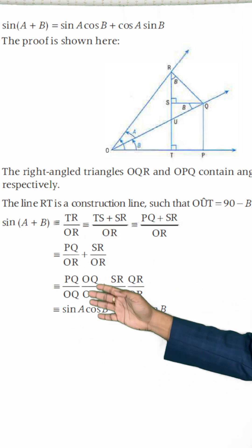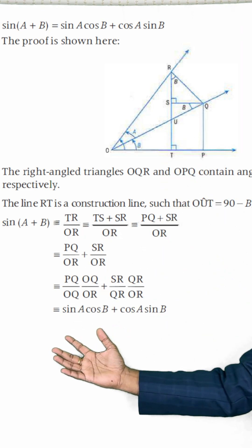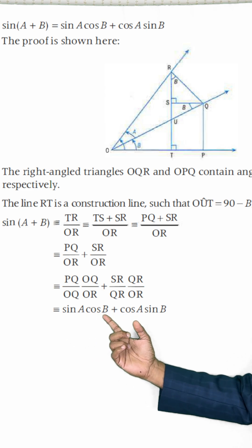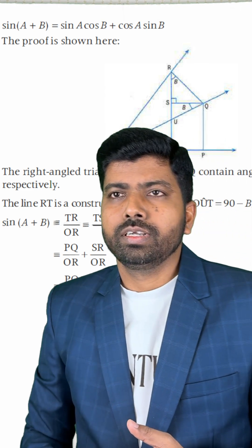If you match all these sides with this diagram, then finally we can get sine A into cos B plus cos A into sine B. I hope you got clear idea about this.